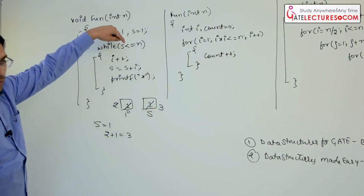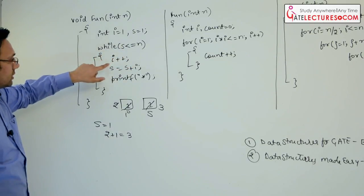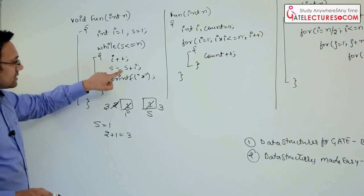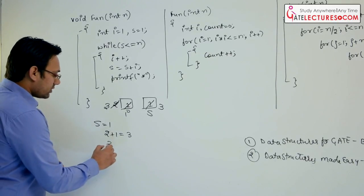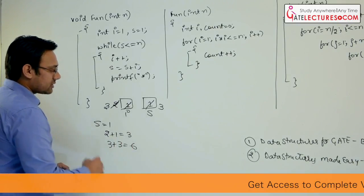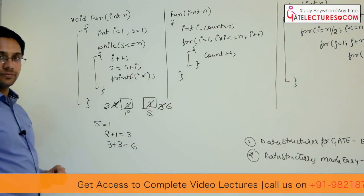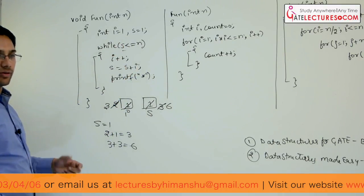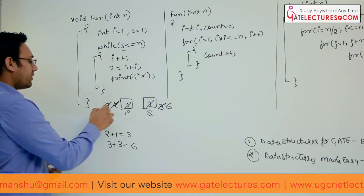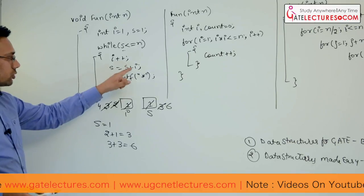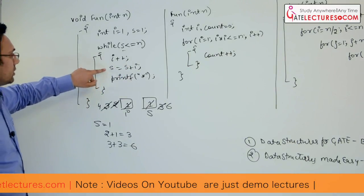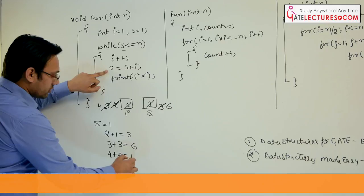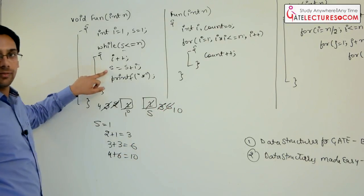Again we execute the statement. Now 3 is less than n, so we make i++, and the value of i becomes 3. Therefore s = s + i, which is 3 + 3 = 6, so s becomes 6. Next time s is 6, which is less than or equal to n, so i becomes 4. Then s = s + i, which is 6 + 4 = 10. Therefore the value of s will become 10.